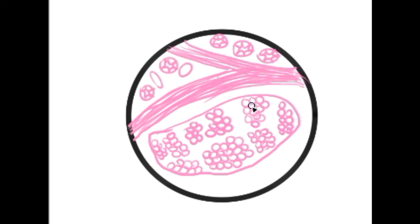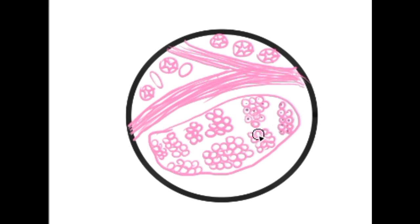The cells also contain glycogen. These cells have centrally located nuclei that can vary from small and hyperchromatic to large and vesicular.